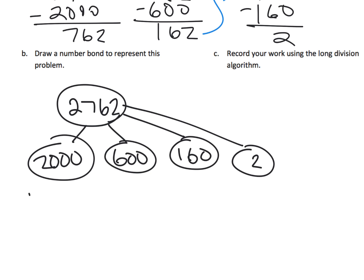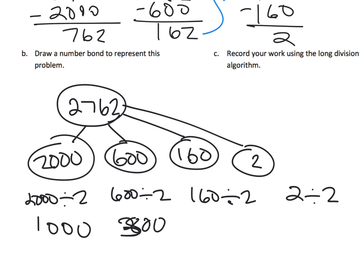600 divided by 2, 160 divided by 2, and 2 divided by 2. So that's our 1,000, 300, 80 and 1.